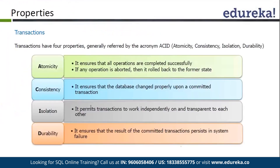Here we call it ACID — the ACID principle that is used in transactions. ACID means: A stands for Atomicity. It simply means all the operations are completed successfully, or no operation is completed. It means if there is any issue with any of the transaction actions, we just roll back everything — so we maintain our atomicity.